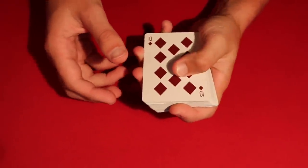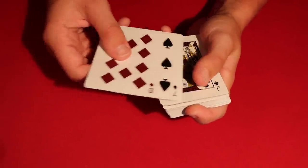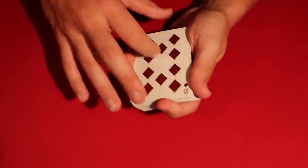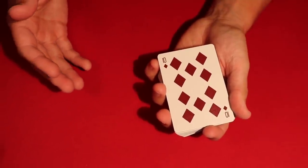You can flip the deck over, and what you can do is show the spectators. Okay, you have the ten, the seven, and the jack. Okay, now you don't spread too much. You just show them these three cards. Put it back on the table.